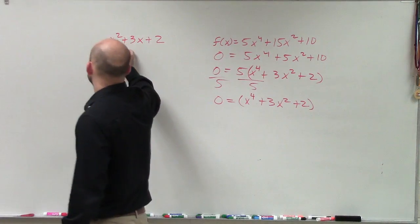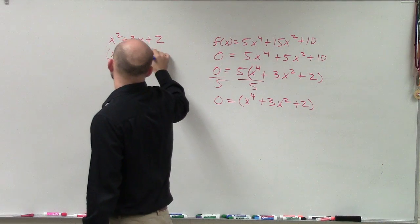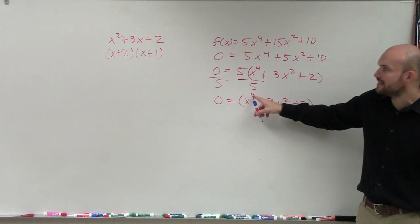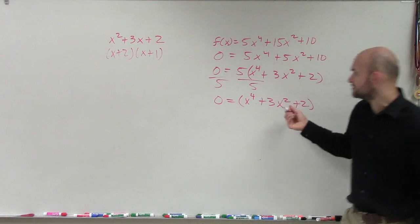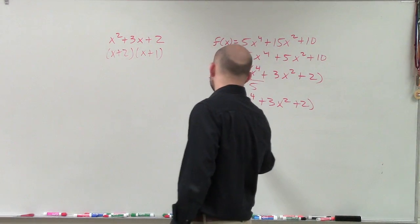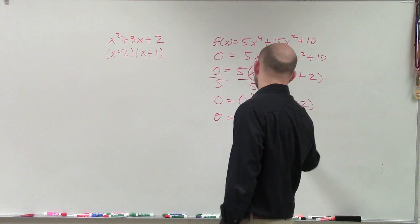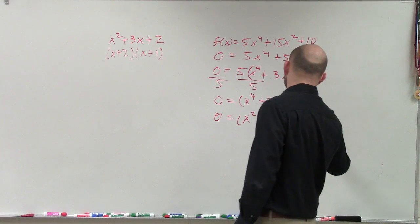Yeah, that's just going to be x plus 2 times x plus 1, right? So here it's the same thing, but now we need to multiply our first two terms and get to x to the fourth. So zero equals x squared plus 2 times x squared plus 1.